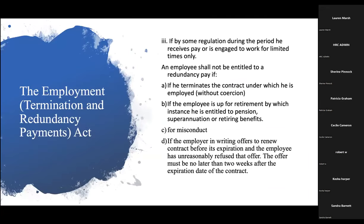The Act also says an employee shall not be entitled to payment if: A — they terminate the contract under which they are employed without coercion; B — the employee is up for retirement, including pension, superannuation, and retirement benefits; C — for misconduct; and D — if the employer in writing offers a renewed contract before it expires and the employee unreasonably refuses. That offer must come no later than two weeks after the expiration date of the contract.